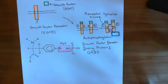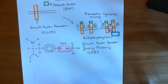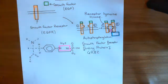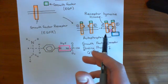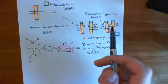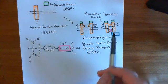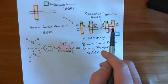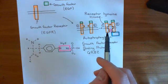So far, what we have seen is that the growth factor will bind to its growth factor receptor, change the conformation of that growth factor receptor, and then the growth factor receptors with the growth factor bound will dimerize. Then the process of autophosphorylation occurs where the tyrosine kinase domain of receptor 1 phosphorylates the tyrosine residues of receptor 2, and the tyrosine kinase domain of receptor 2 phosphorylates the tyrosine residues of receptor 1.